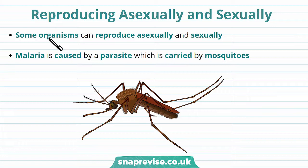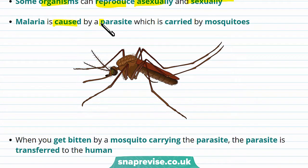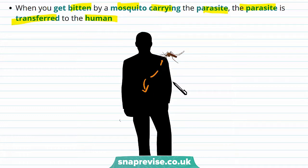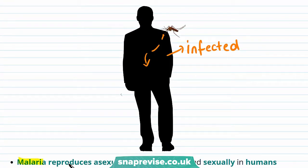Some organisms can actually reproduce both asexually and sexually. For example, malaria is caused by a parasite which is carried by mosquitoes. When you get bitten by a mosquito carrying the parasite, the parasite is transferred to the human, and the human is now infected. The interesting thing is that the malaria parasite reproduces asexually in mosquitoes and sexually in humans, meaning it can reproduce both asexually and sexually.